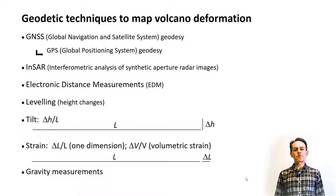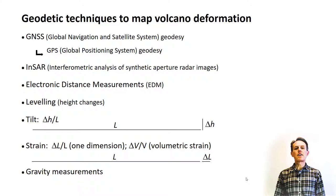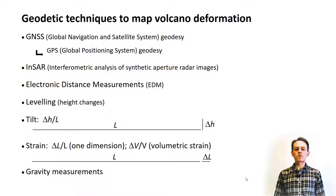Because GPS provides a three-dimensional estimate of motion, it is preferred over EDM. The technique of leveling was used, and still is used, at some volcanoes to measure the height difference between stations and how height differences may vary. Using best practices under favorable conditions, it can provide measurements accurate to the submillimeter level over short distances — more accurate than the space geodetic techniques.